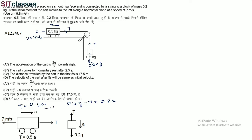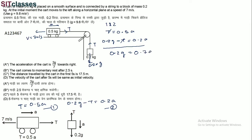Using Equation 1 (T = 0.5a) and Equation 2 (0.2g − T = 0.2a), we add them: 0.2g = 0.7a. Solving for acceleration: a = 2g/7. The acceleration is directed towards the right.